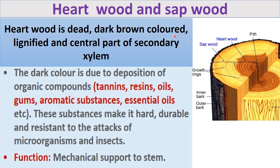Next is the difference between heartwood and sapwood. Heartwood is dead, dark brown colored, and lignified — meaning lignin is present — and it forms the central part of secondary xylem. The wood formed in the central part of secondary xylem is called heartwood. It is dark brown in color, as you can see in the diagram — this central part is secondary xylem, and this dark brown colored wood is heartwood.